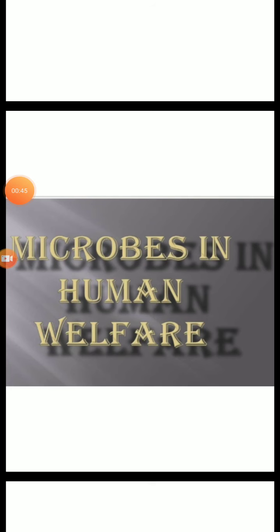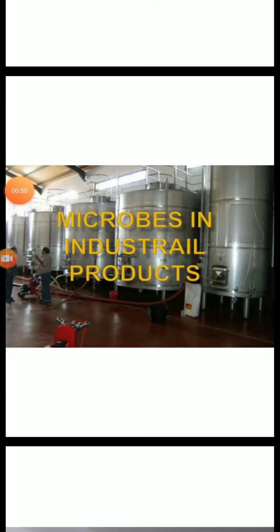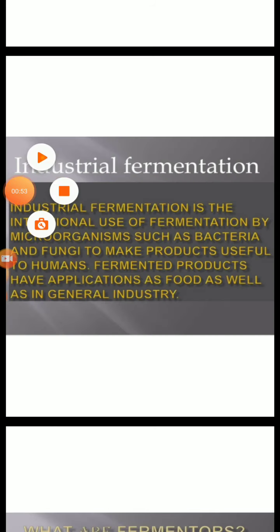So we are studying this chapter — microbes in human welfare. Today we will study about microbes in industrial products. Even in industries, microbes are used to synthesize a number of products valuable to human beings. Beverages and antibiotics are some examples.